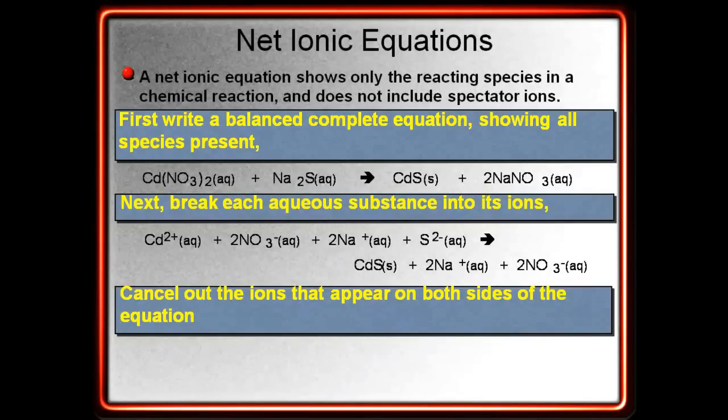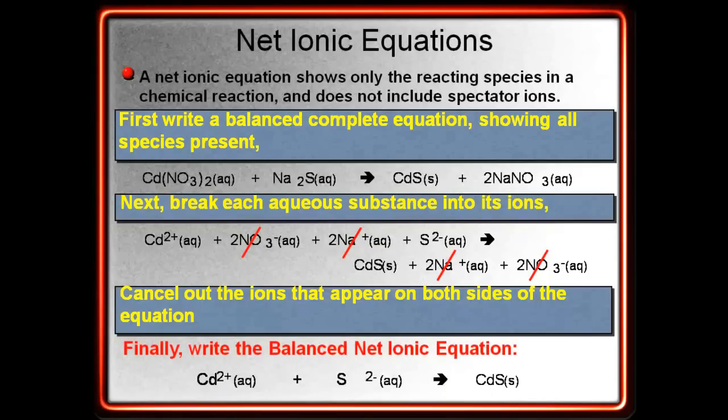After you've broken up the aqueous substances into ions, you want to go through and cancel out the ions that appear on both sides. So, in this equation, nitrate appears on the reactant side and the product side, as well as sodium, it appears on both sides. So, we can cancel those out. Now, the things left behind are the ones that are going to make up our net ionic equation. So, we write this balanced net ionic equation. We have our cadmium-2 ion, our sulfide ion, and they will bond together to form the solid cadmium-2 sulfide.